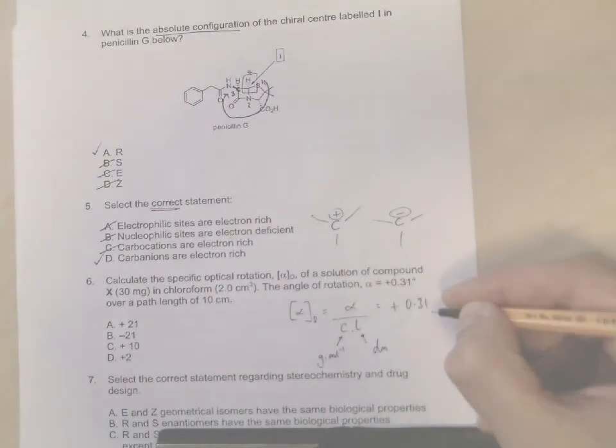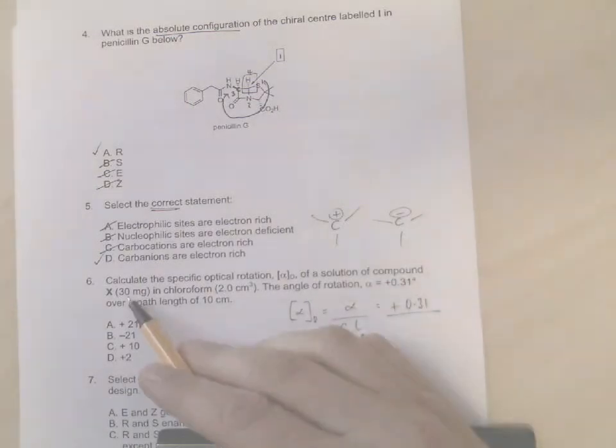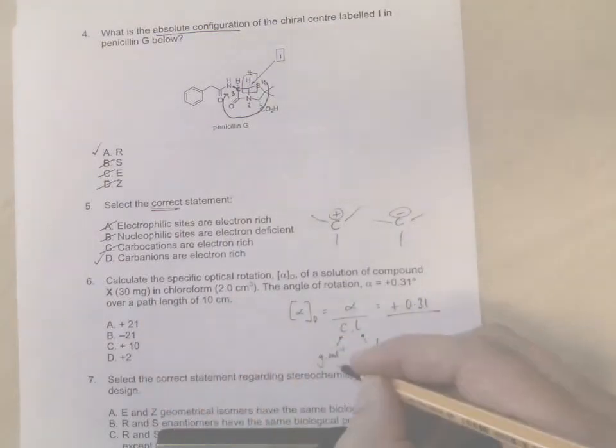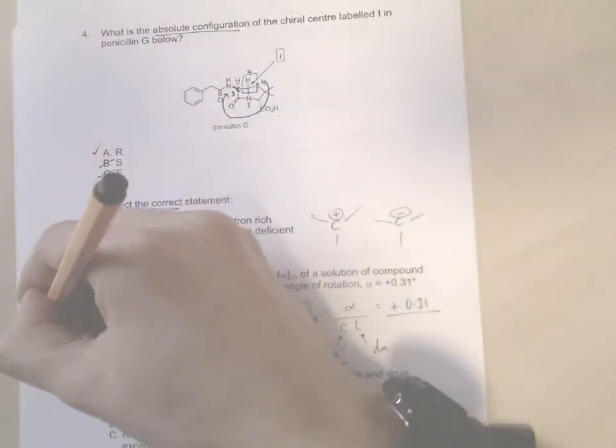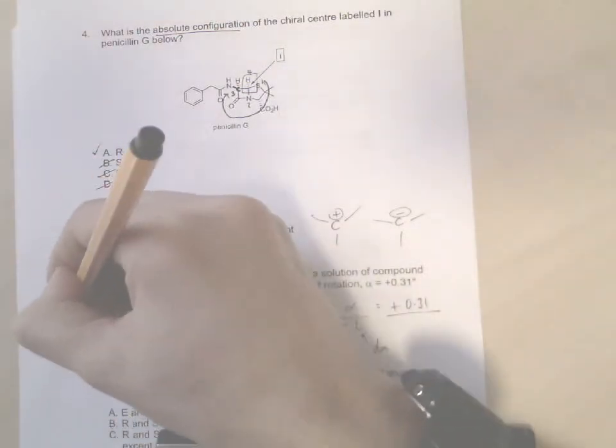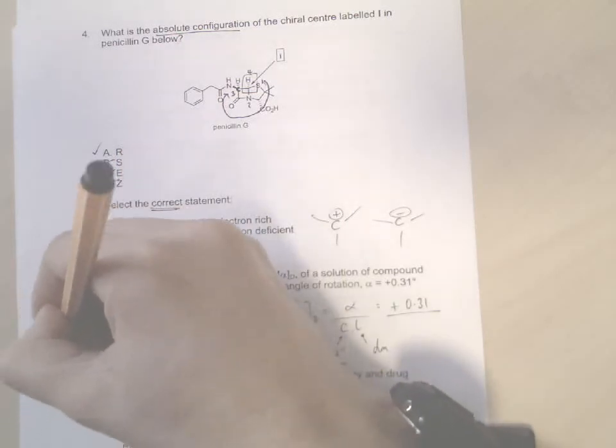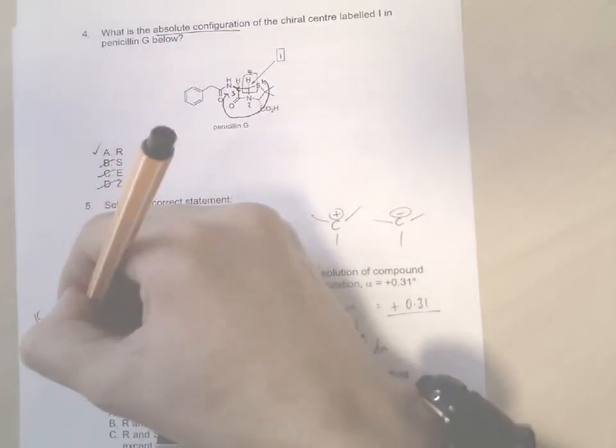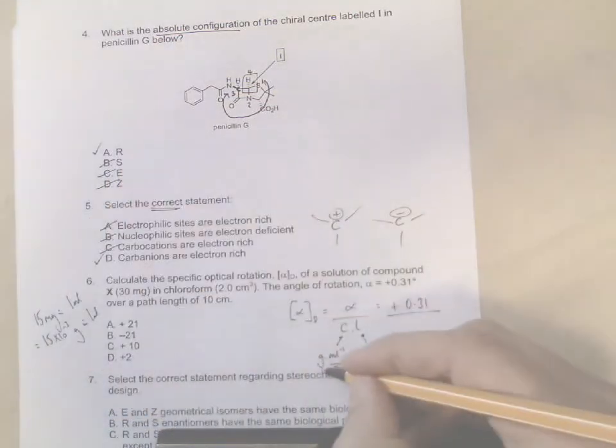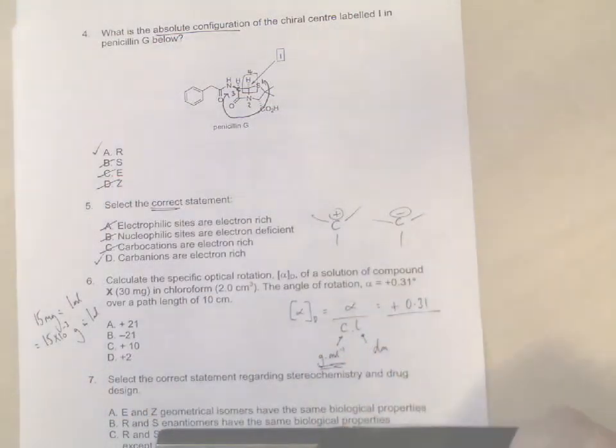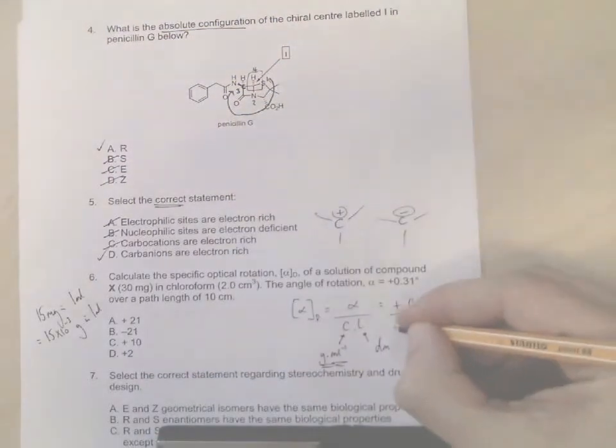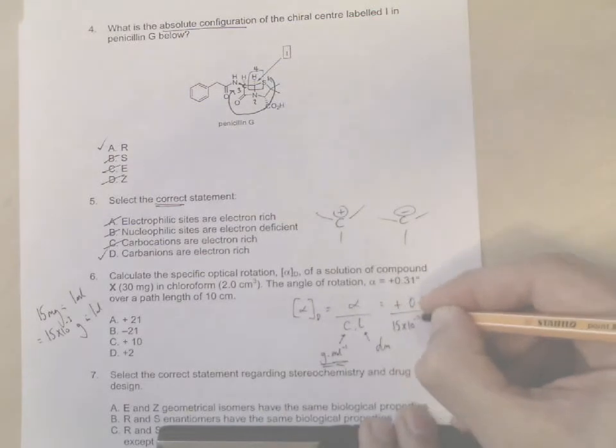Okay, so if we plug those numbers into the equation, we get alpha is plus 0.31. We have a concentration of 30 milligrams in two mil, which means there's only 15 milligrams in one mil. Because remember this is 15 milligrams per mil. So 15 milligrams in one mil is equal to 15 times 10 to the minus 3 grams in one mil, because remember we need units of grams per mil. So now we have 15 times 10 to the minus 3 grams per mil times length.